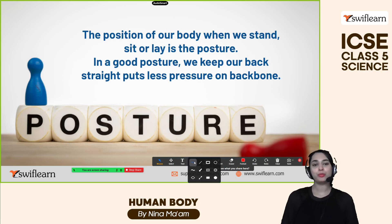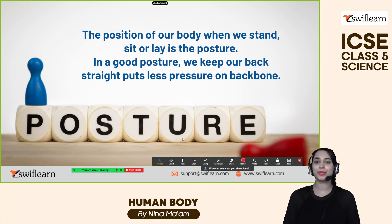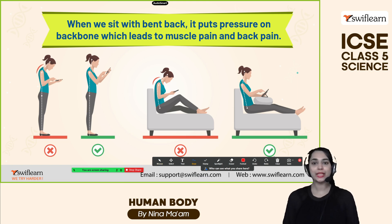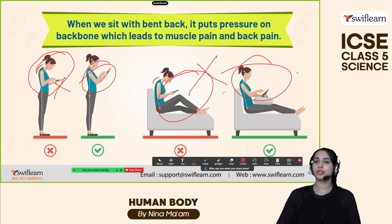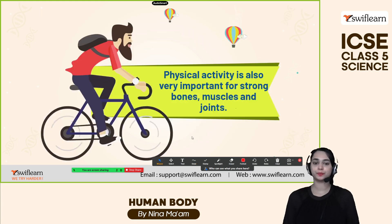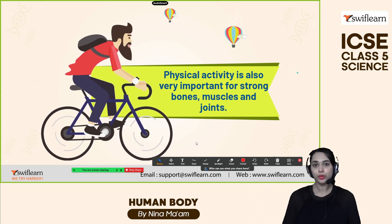Posture is the position of our body when we stand or sit. In a good posture, we keep our back straight, which puts less pressure on the backbone — this is very essential. Otherwise, we will have cramps and muscle pain. We can see good posture and bad posture examples. Try not to put a lot of pressure on your back when bending, as it leads to muscle pain and back pain. Physical activity is also very important for strong bones, muscles and joints — you can do cycling, swimming, walking and cardio activities, which will improve our flexibility.